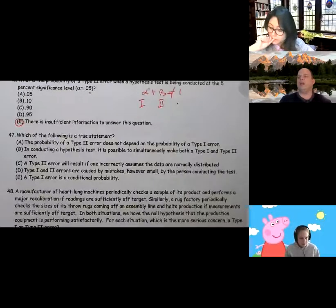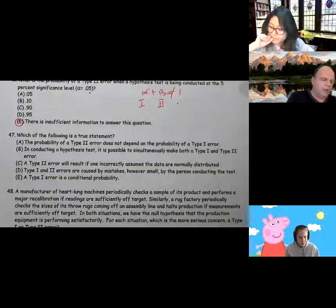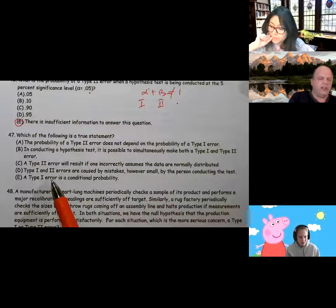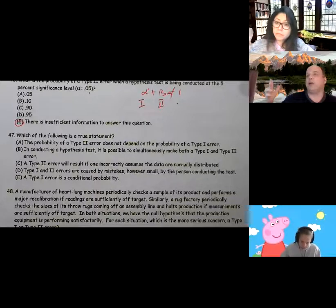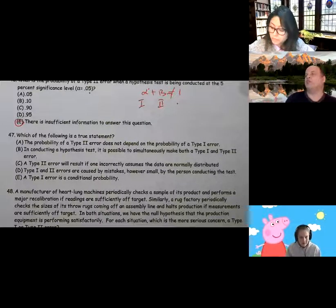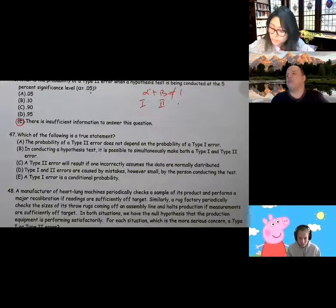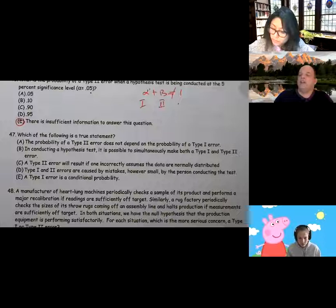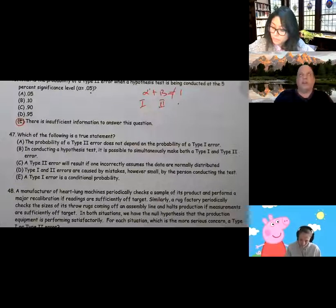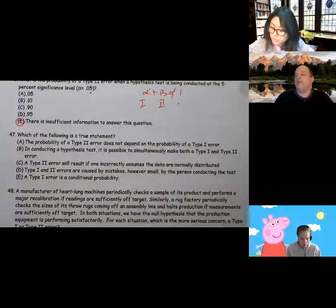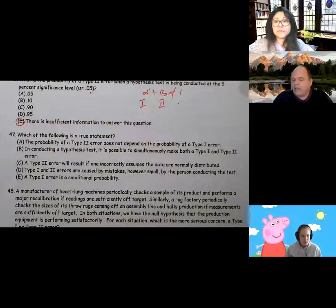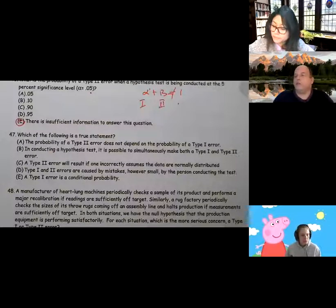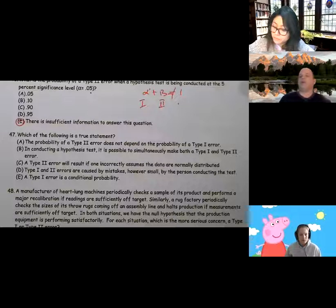So question number 47. Which of the following statements is a true statement? A Type 1 error is a conditional probability. Power is a conditional probability. P-value is a conditional probability. Type 1 error is a conditional probability, and Type 2 errors are conditional probabilities. All of them are, and to be a conditional probability, we're saying given. And most of the time, for a Type 1 error, given the null is true, p-value, given the null is true, and Type 2 error was given that the null is false. So almost everything we're talking about when we're talking about errors, powers, are all conditional probabilities.